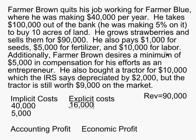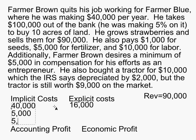Farmer Brown desires a minimum of five thousand dollars in compensation for his efforts as an entrepreneur. This is the amount he wants to pay himself — otherwise it's just not worth it to stay in business. Is that an implicit or explicit cost? It's an implicit cost because it's not money moving from Farmer Brown to someone else; it's something in his mind that he has to have, otherwise he'll leave this business in the long run. This five thousand is what we call normal profit — the return to entrepreneurship.